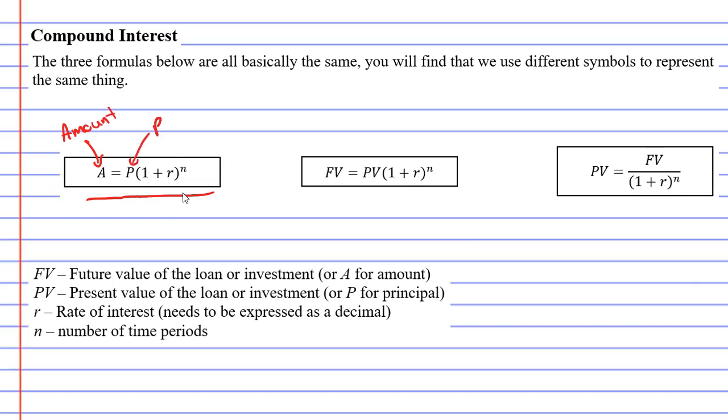P stood for principal, R stood for interest rate, and N stood for the number of time periods.